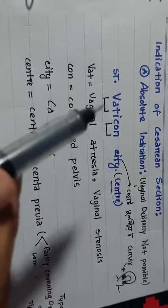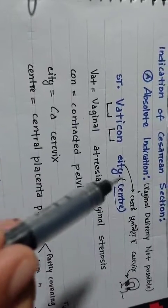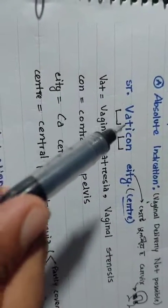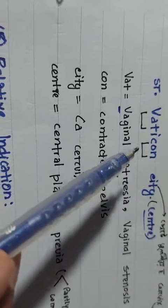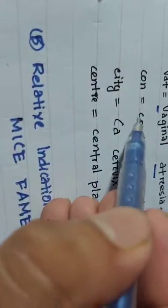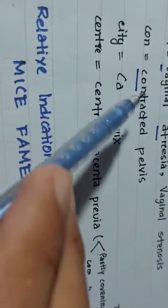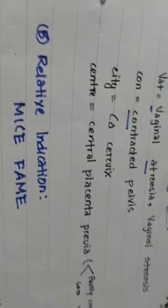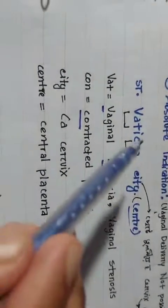Vatican City is the smallest country in the world. V-A for vaginal atresia — vaginal obstruction. Then C-O-N: 'Con' stands for contracted pelvis. So vaginal atresia and contracted pelvis. Then C-T stands for carcinoma cervix (Ca cervix).